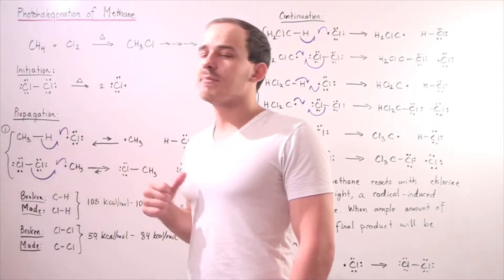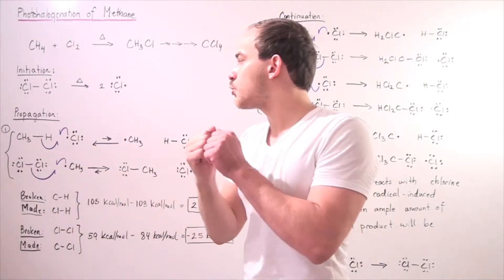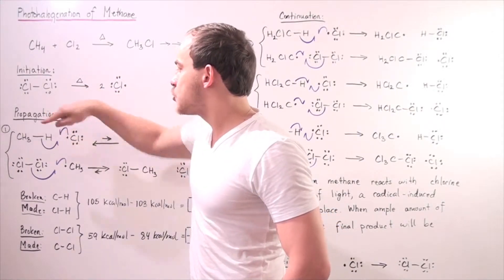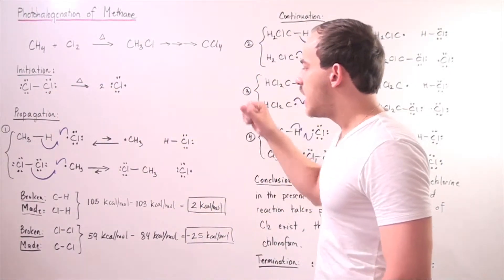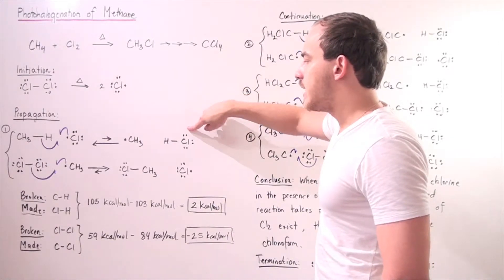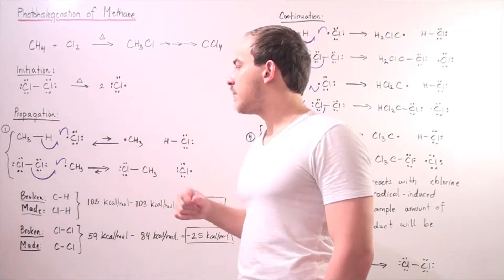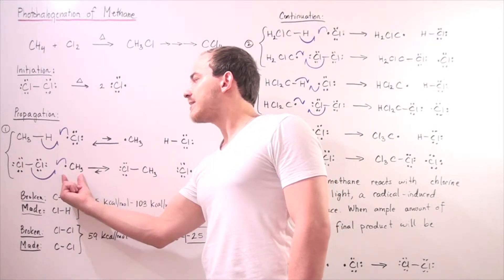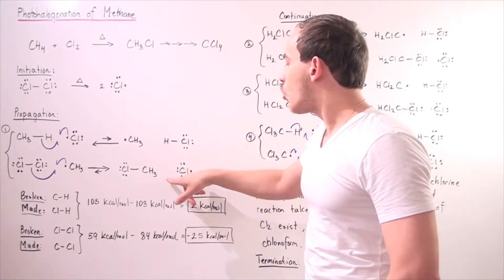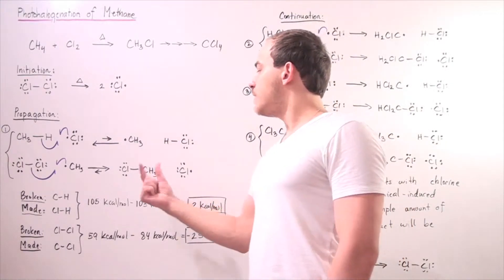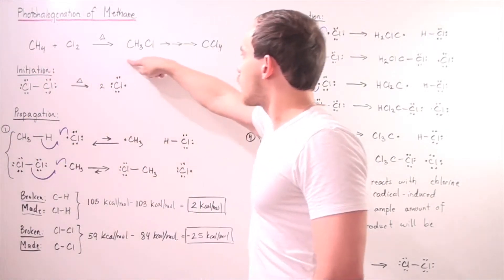In the second process, known as propagation, we have the methane molecule. The carbon-H bond breaks, and one of the electrons next to the H reacts with the single electron on the chain-carrying radical formed in the initiation step, forming an HCl bond and giving us a new chain-carrying radical. In the second step of propagation, this chain-carrying radical interacts with a chlorine molecule, which dissociates to form a chloride radical, our new chain-carrying radical, and we form our methyl chloride molecule.